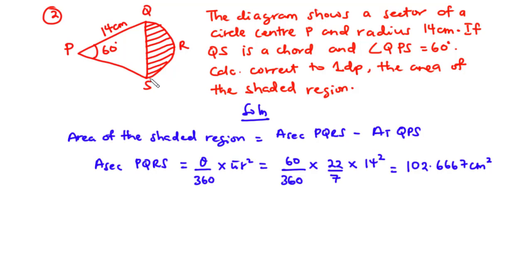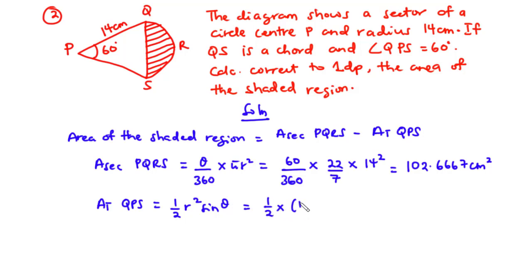Now let's find the area of triangle QPS. Since none of the angles are 90 degrees, we use the formula: half times r squared times sine theta. That is half times 14 squared times sine 60 degrees, which equals 84.8705 centimeters squared.